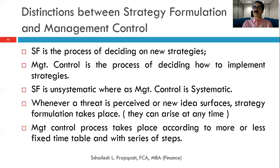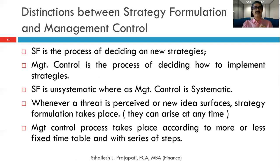There are four distinctions between management control and strategic formulation. Strategy formulation is the process of deciding on new strategies, whereas management control is the process of deciding how to implement a particular strategy. Strategic formulation is unsystematic, whereas management control is systematic. As an example, during the lockdown period every organization has been changing its strategy each week or fortnight to sustain in the market.